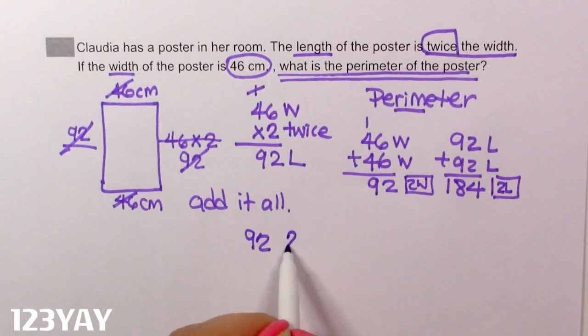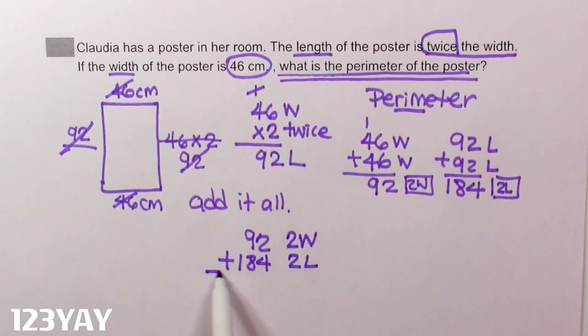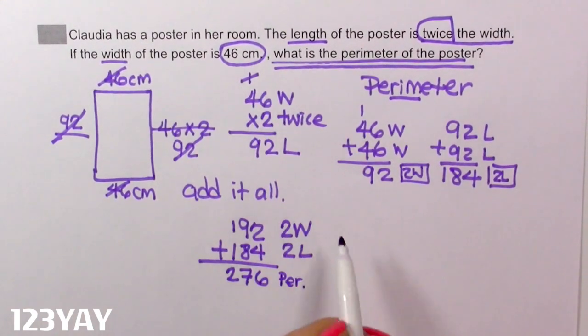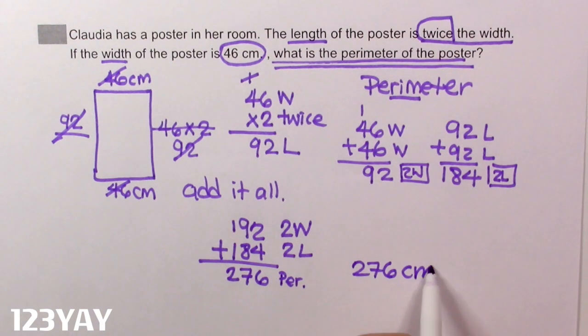92, label, 2 width. Plus 184, label, 2 length. Equals 2 plus 4, 6. 8 plus 8, 16 plus 1, 17. 1 plus 1, 2. And this is the perimeter. What about the unit, guys? The units are centimeters. So the perimeter is 276 centimeters.